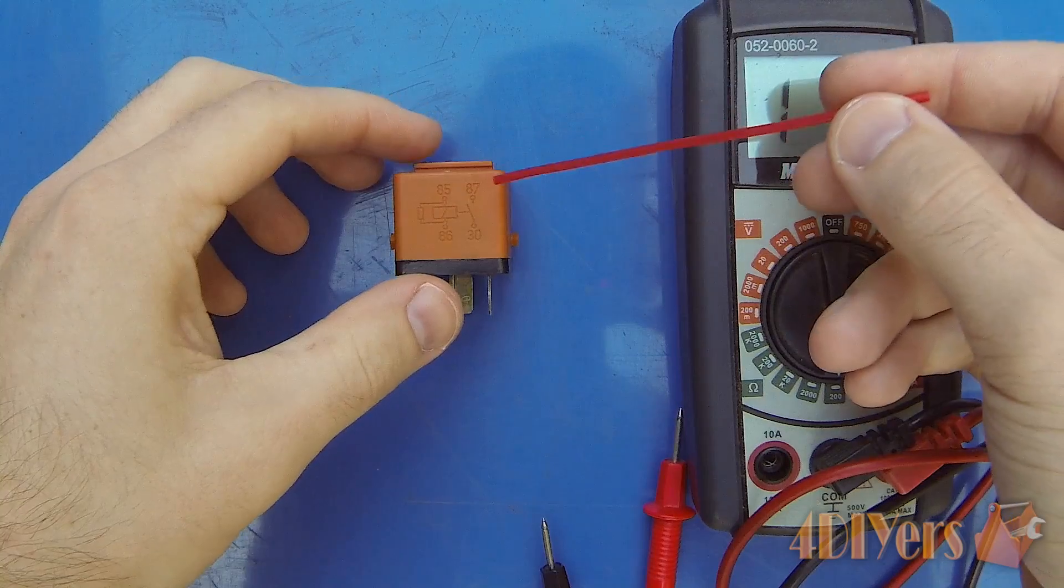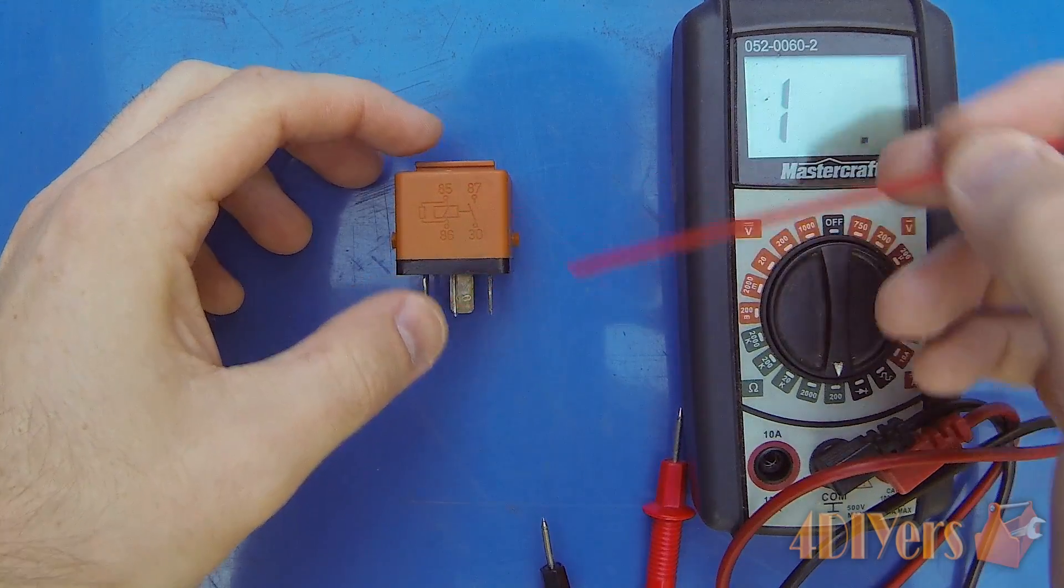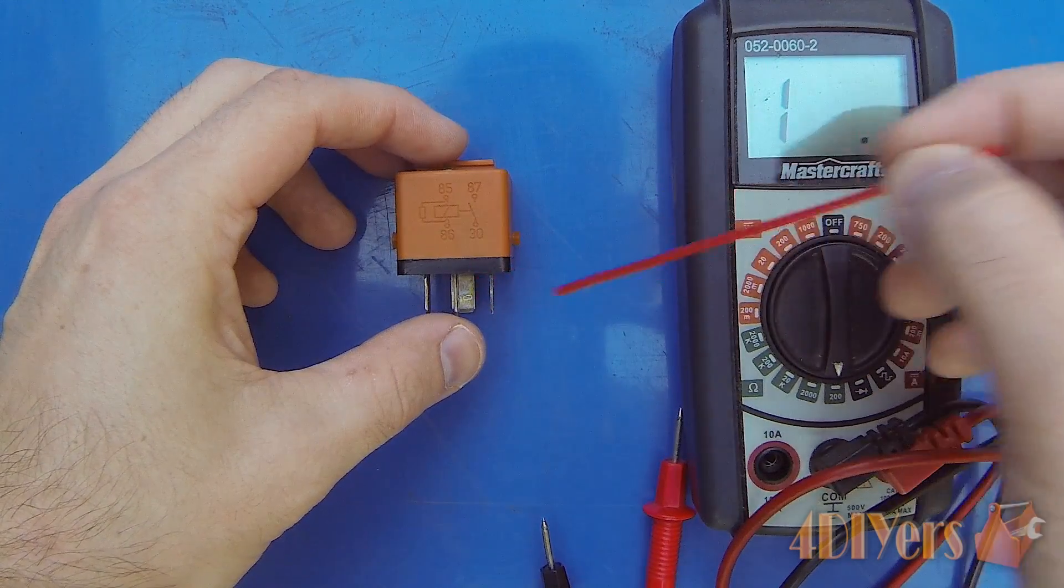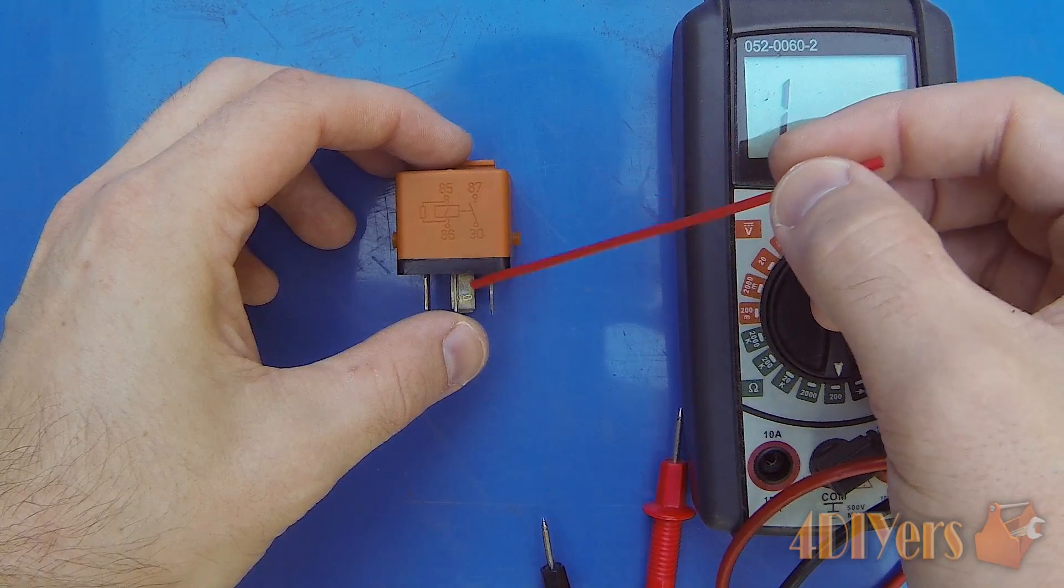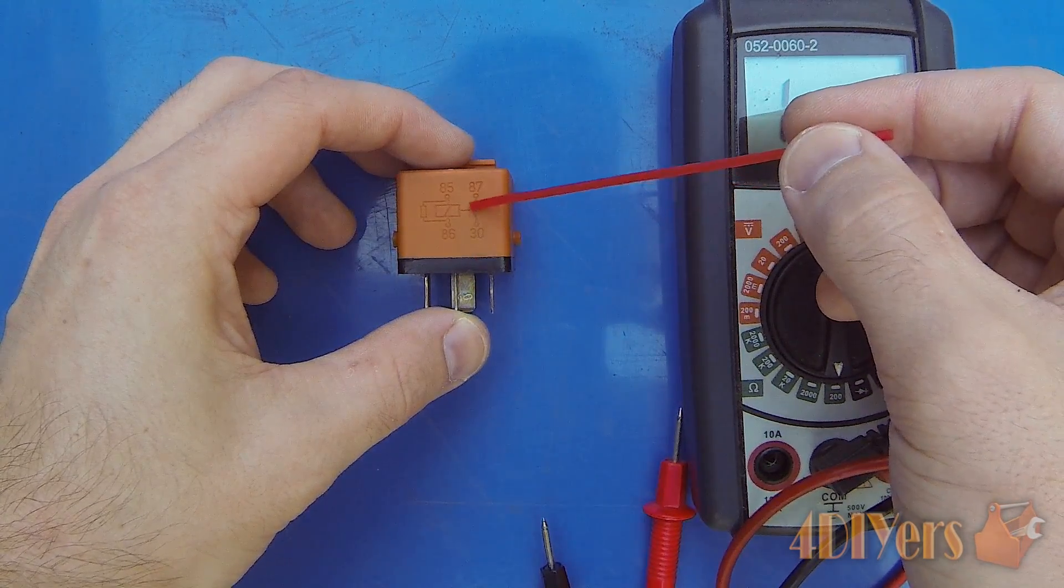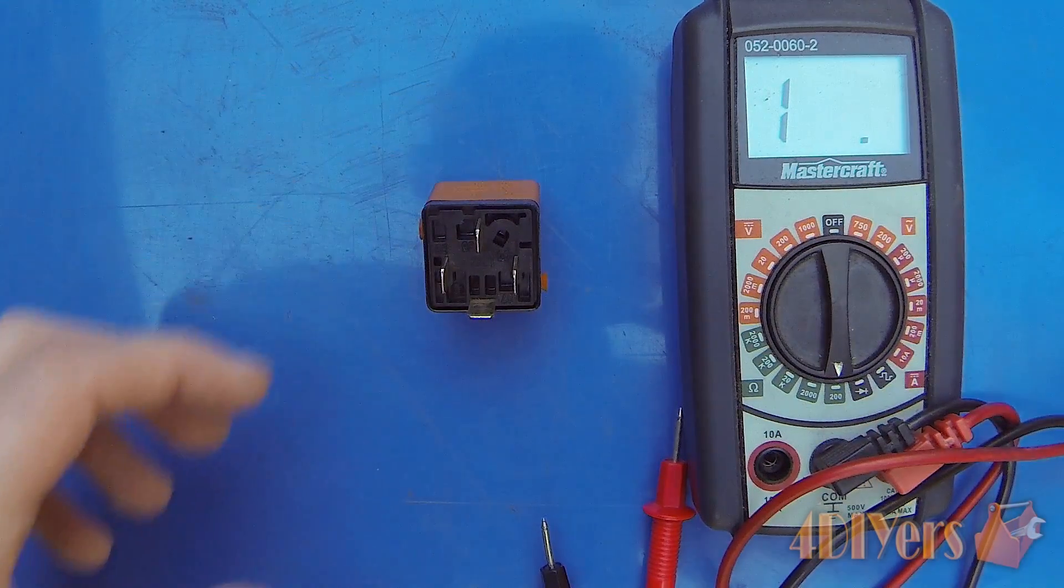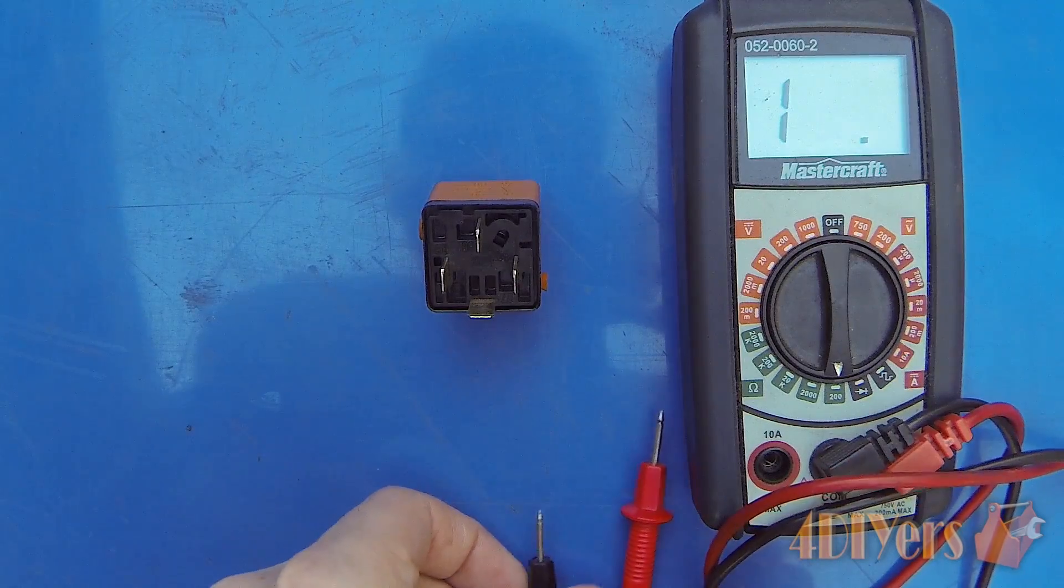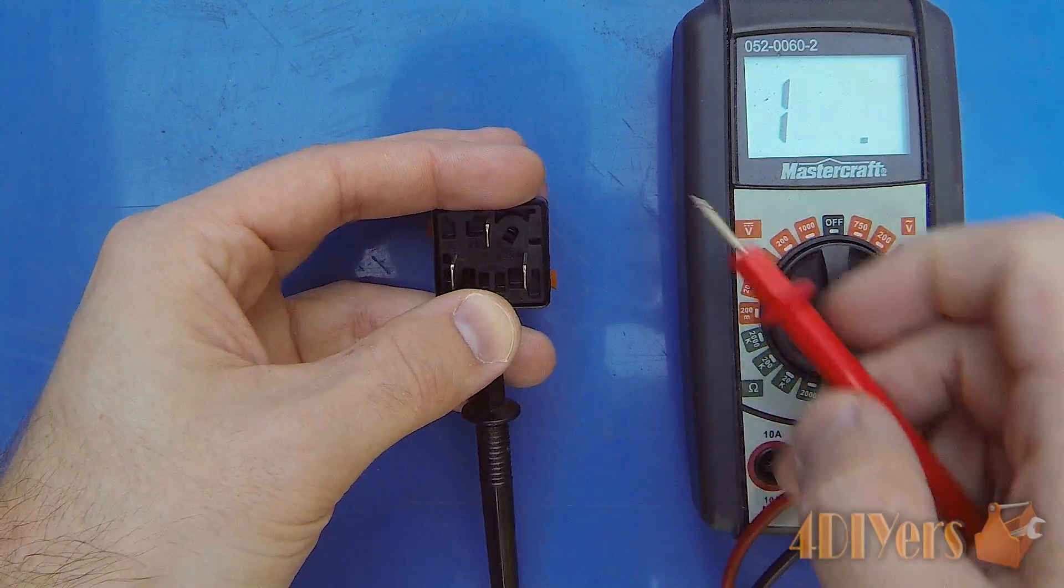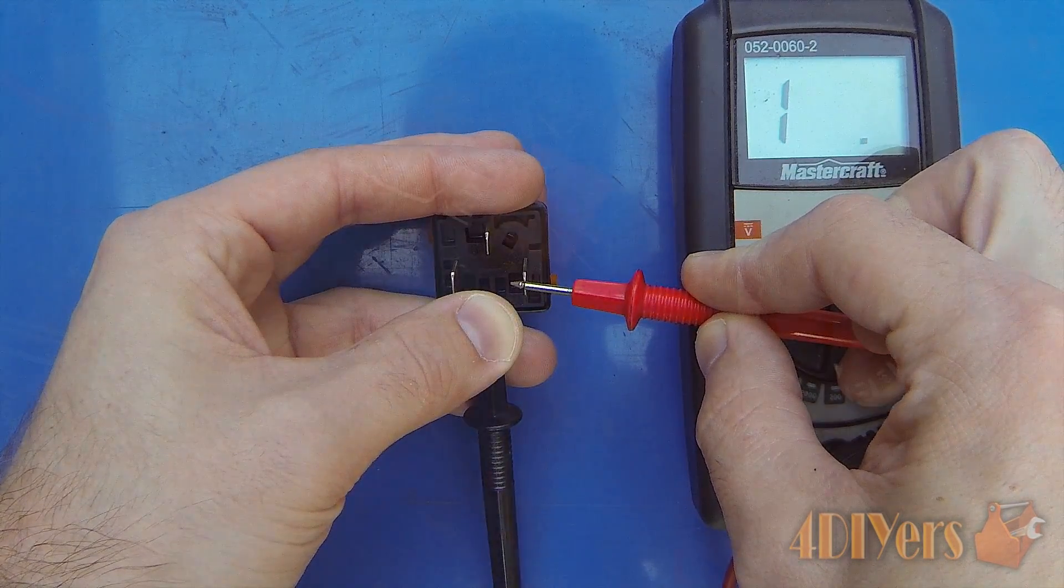Pins 87 and 30 power the switching portion. There should be no connection when we test these pins. If the contacts have welded together, this will be a closed circuit and show a zero ohms reading. Using pins 87 and 30, there's no reading, so the circuit is working correctly.